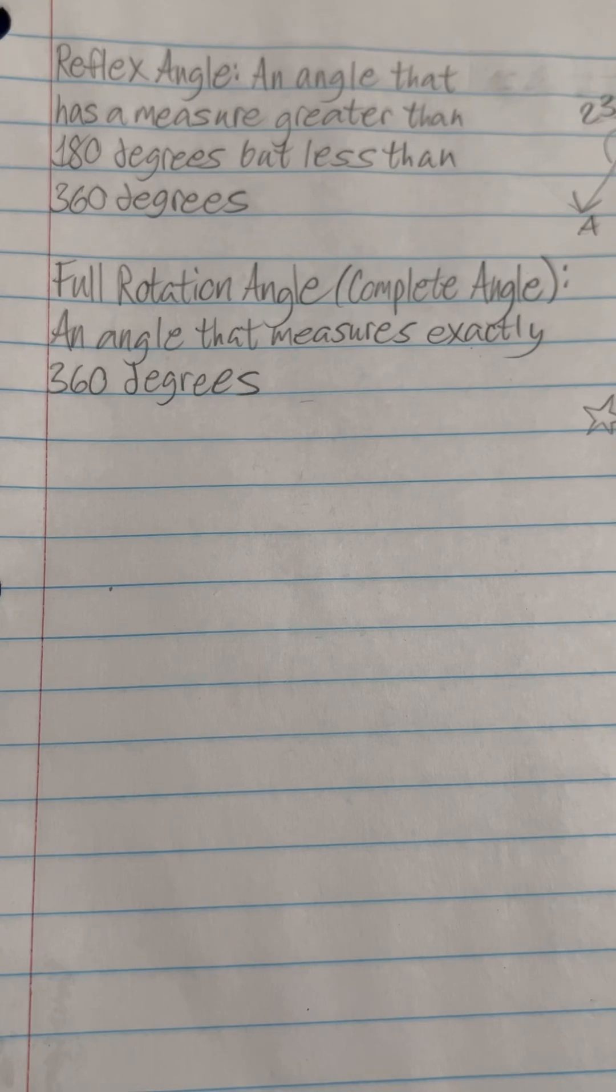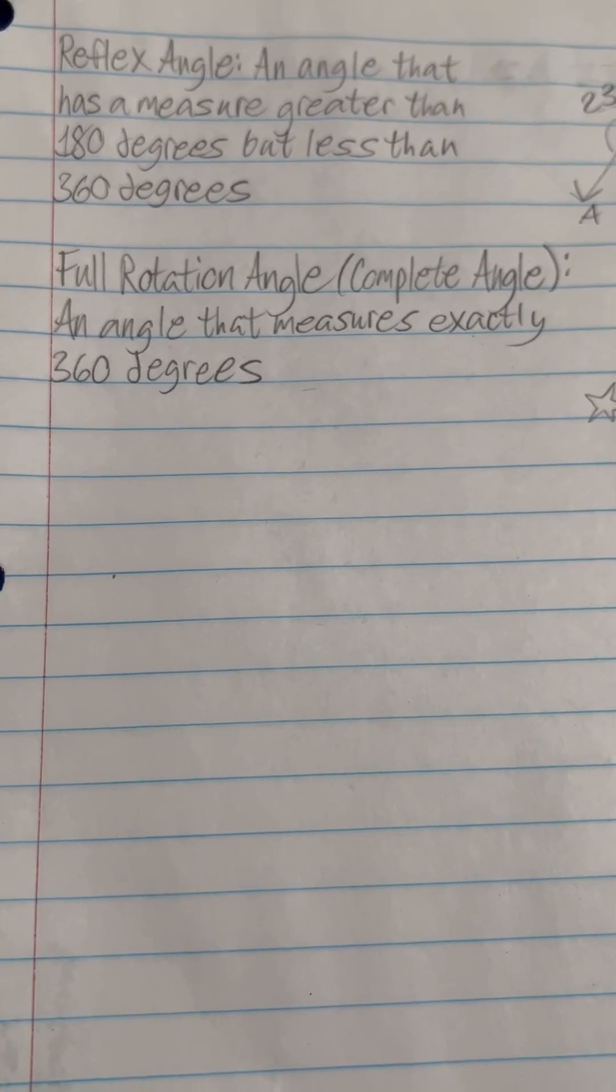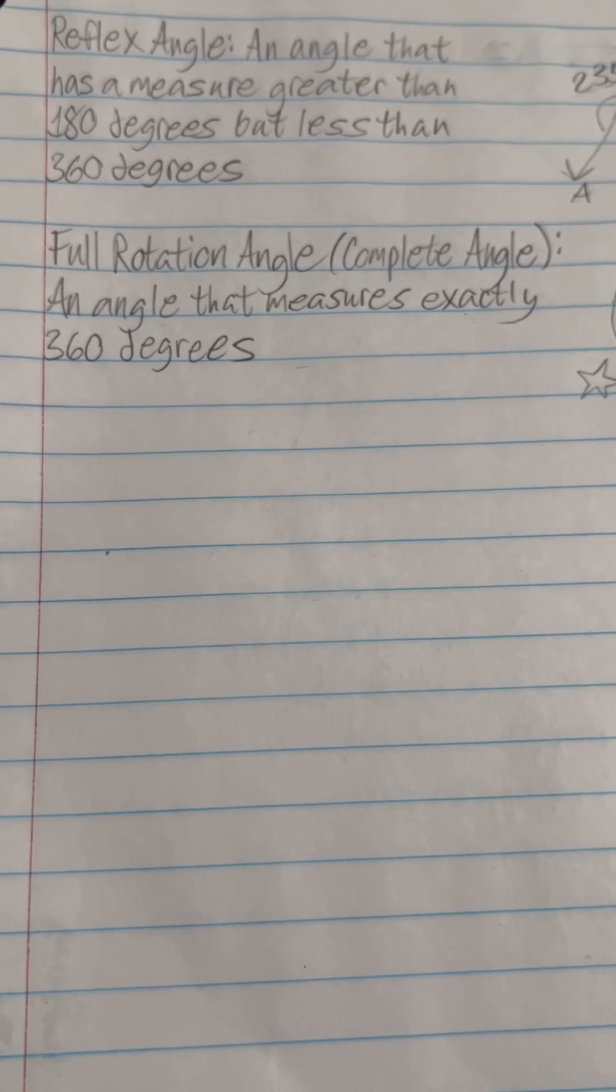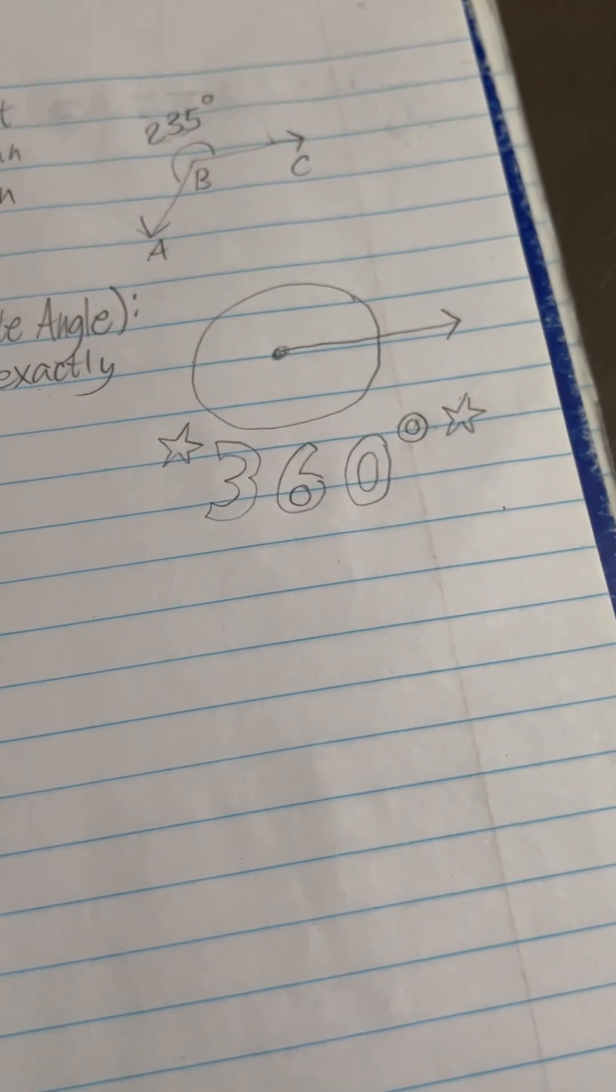And finally, a full rotation angle, also known as a complete angle, is an angle that measures exactly 360 degrees. It makes a full circle.